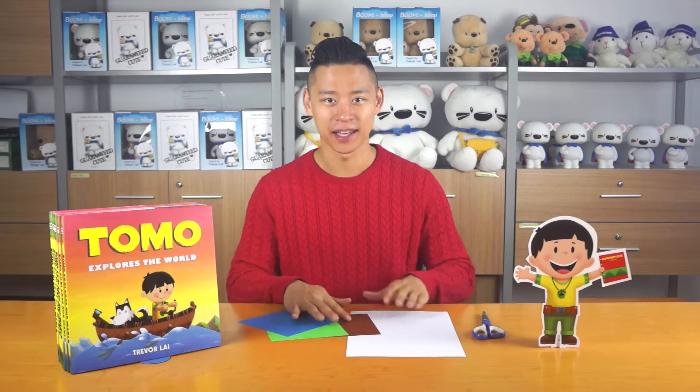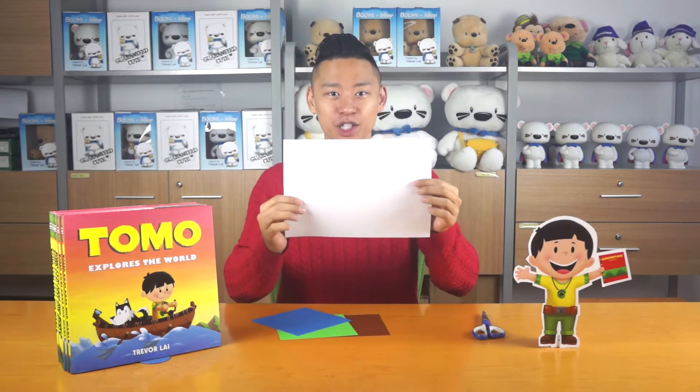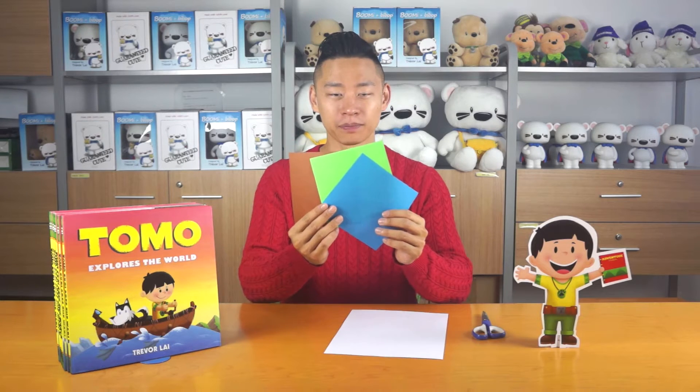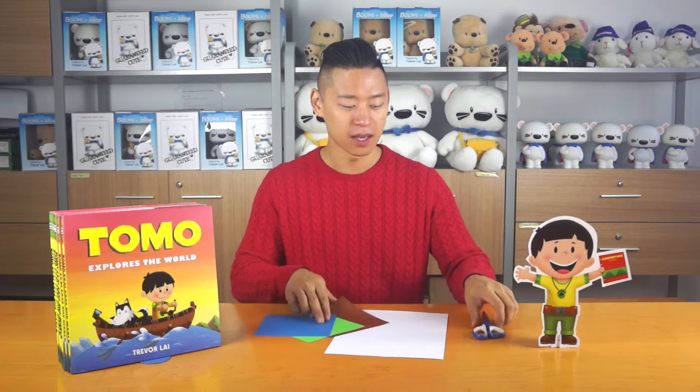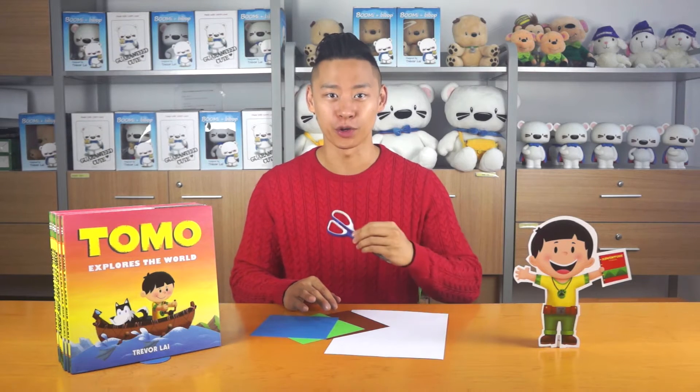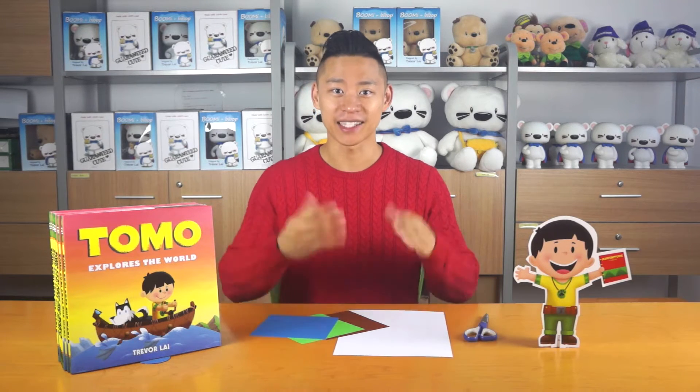Here are the tools you'll need. First, you can use a regular sheet of paper, or you can get a piece of colored paper or construction paper. Next, you'll need a pair of scissors to cut out a mini Tomo to put on your boat. And that's everything you'll need.